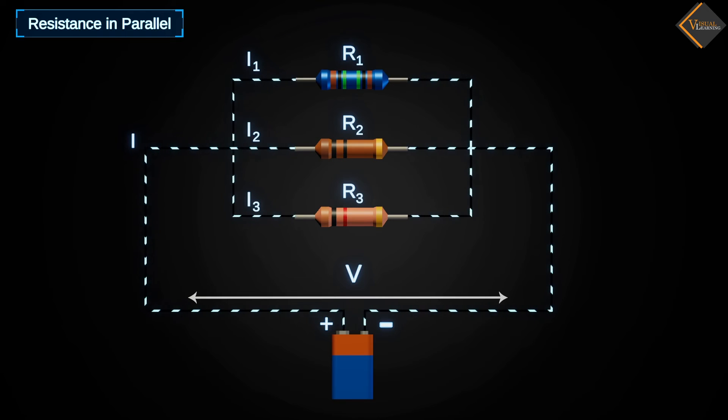In the animation, we observe that the same potential is applied across all three resistors, but the current values are different.